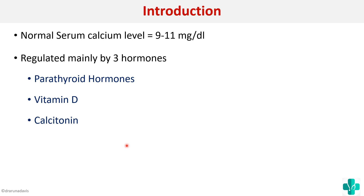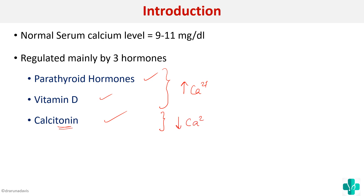Of the three hormones involved in regulation of calcium — parathyroid hormone, vitamin D, and calcitonin — parathyroid hormone and vitamin D increase the calcium levels, whereas calcitonin, as the name suggests, tones down calcium. So calcitonin will decrease the calcium level.